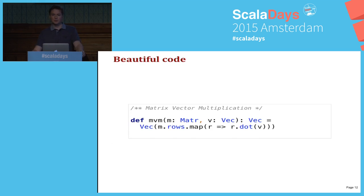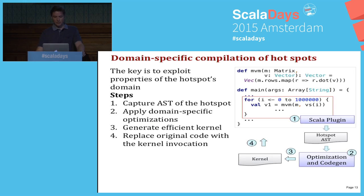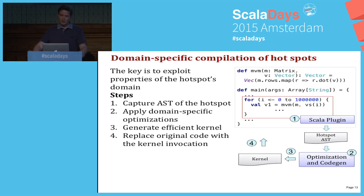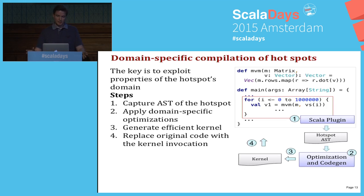This is an example of beautiful code — nothing to add, nothing to remove. This is the logic we don't want to change. So how do we do this? We take a hotspot, give its AST to a Scala plugin inside the Scala compiler. We annotate the hotspot, take its AST, put it into an optimization framework specifically designed for such hotspots, generate a kernel, and then replace the invocation of the hotspot with the newly generated kernel. This happens automatically during compilation time.